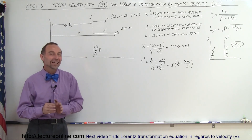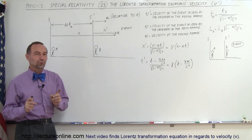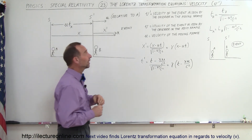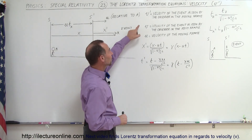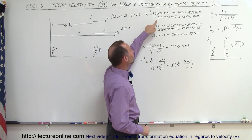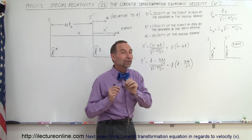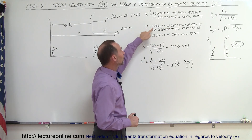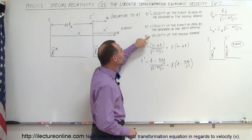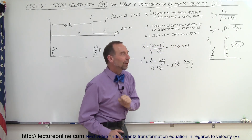Welcome to that lecture online. Now let's take a look at the Lorentz transformation equations for velocity. V' is the velocity of the event as seen by the observer in the moving reference frame. V is the velocity of the event as seen by the observer in the rest frame, and U is the velocity of the moving frame relative to the rest frame.